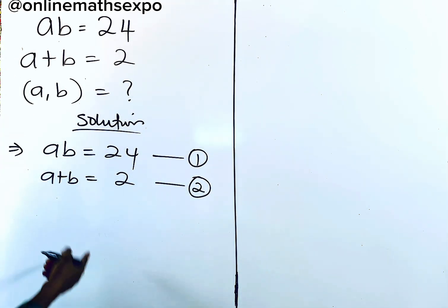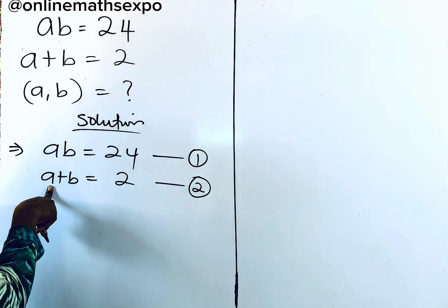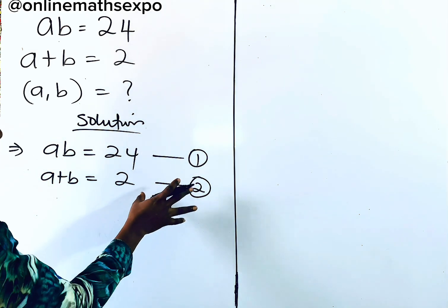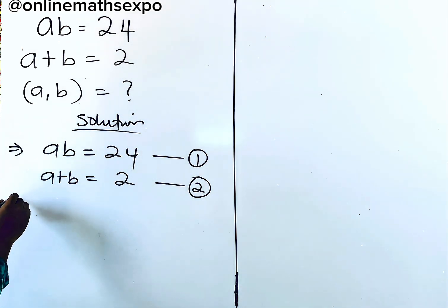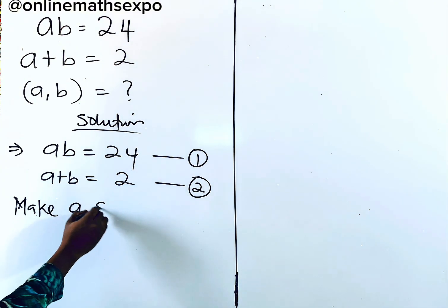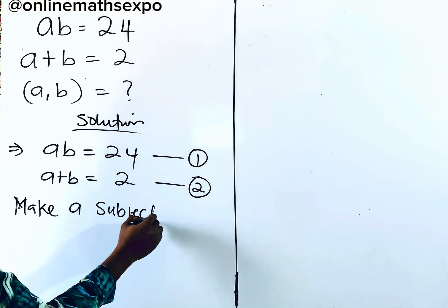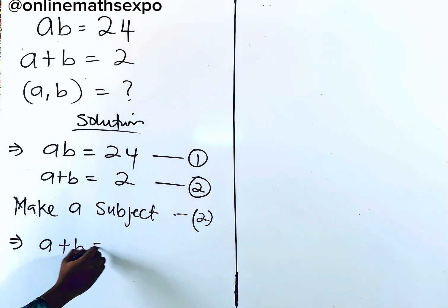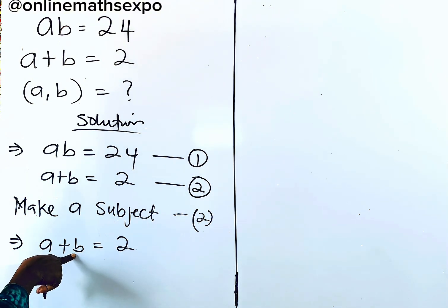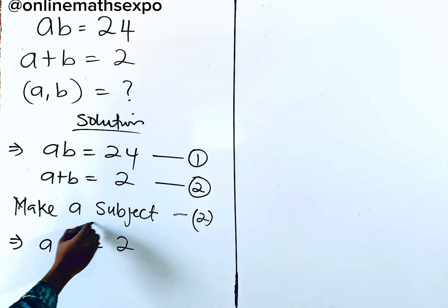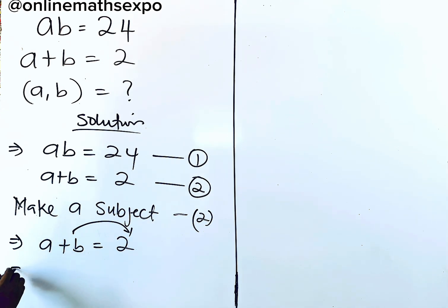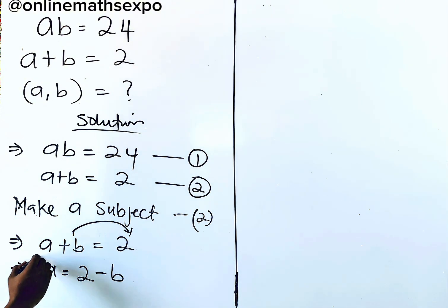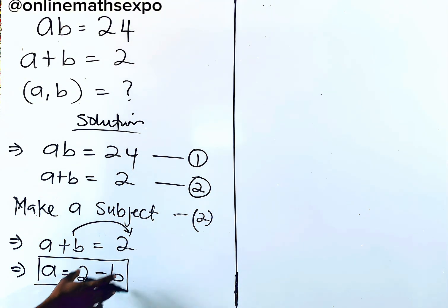What we do next is make 'a' the subject from equation 2, then substitute into equation 1. You can do it vice versa, but making it from equation 2 makes the work easier. So from equation 2: a + b = 2. To make 'a' the subject, subtract b from both sides — since b is positive, you subtract it — giving us a = 2 - b.